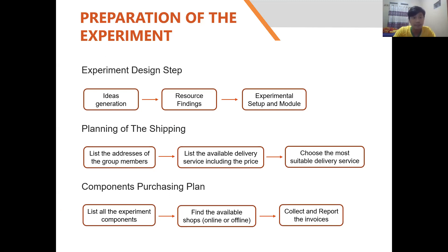The first section is the preparation of the experiment. The first step is experiment design, which involves generating ideas, finding resources, and making the experimental setup and module. The second is the planning of shipping, done by listing group members' addresses, listing available delivery services with their prices, and choosing the most suitable one. The third is the components processing plan, which involves listing all experiment components, finding available shops online or offline, and collecting and reporting the invoices obtained.